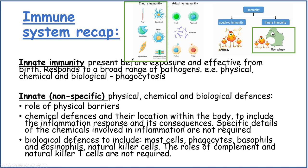Chemical defences include hydrochloric acid in the stomach, lysozyme — an enzyme in the tears which breaks down bacterial cell walls — and the inflammation response by histamine, making the capillaries leaky to speed up the delivery of white blood cells. Specific details of the chemicals involved in inflammation are not required.